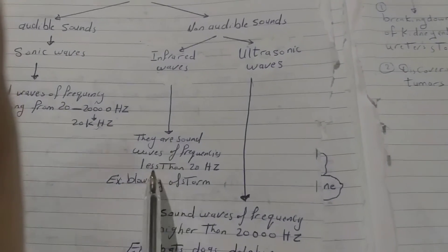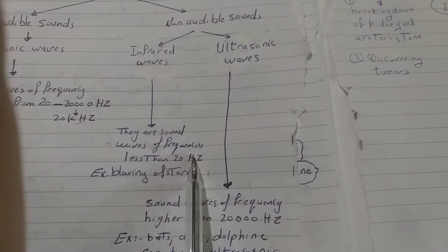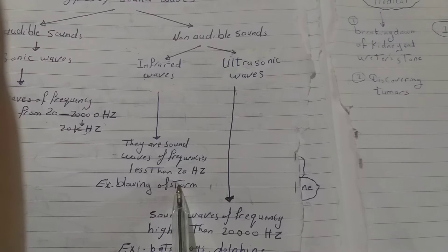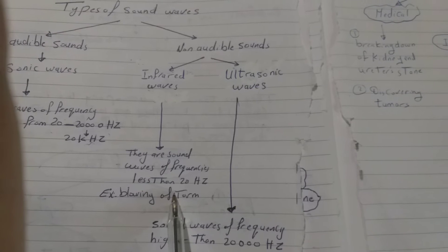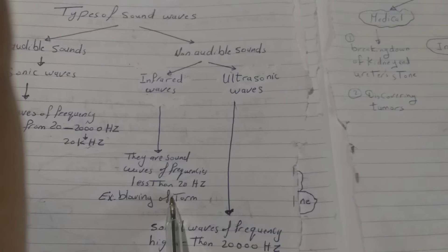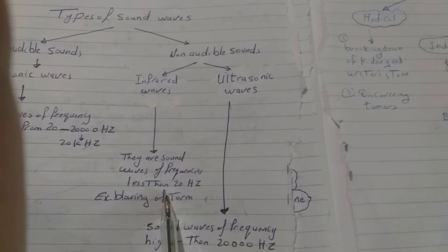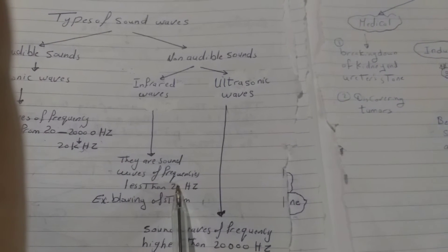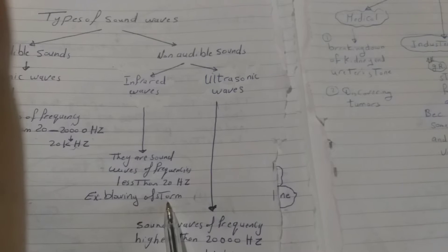Infrasonic waves are sound waves of frequency less than 20 hertz, like the blowing of a storm. You might think we can hear the sound of a storm, but what we actually hear is not the sound of the air itself — it is the sound of trees and different things moved by the air, not the sound of air directly.